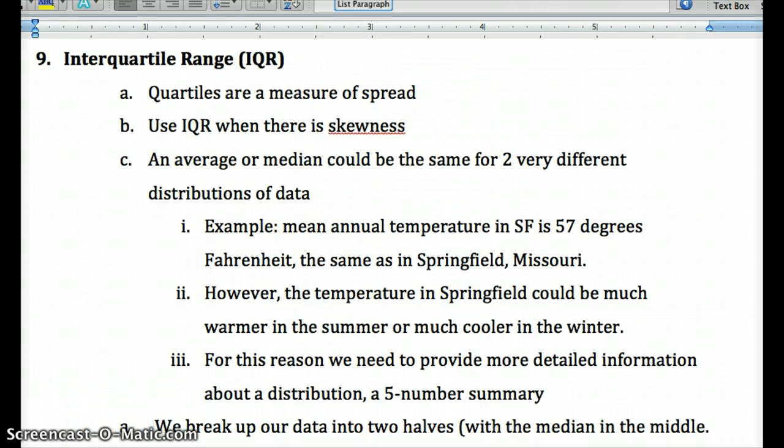So the other measure of our distribution that's thrown off by skewness and outliers would be the range. If we have an outlier that's much higher or much lower, then that's going to affect our range, making our range look like it's much bigger than it really is.